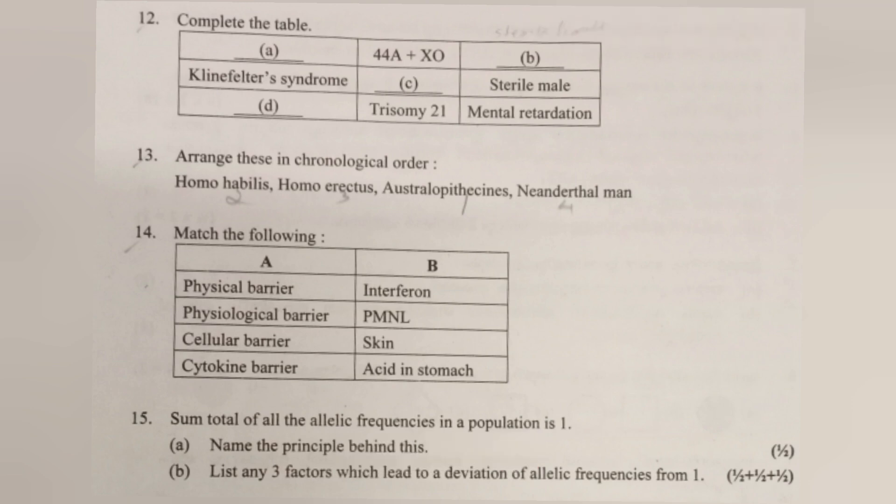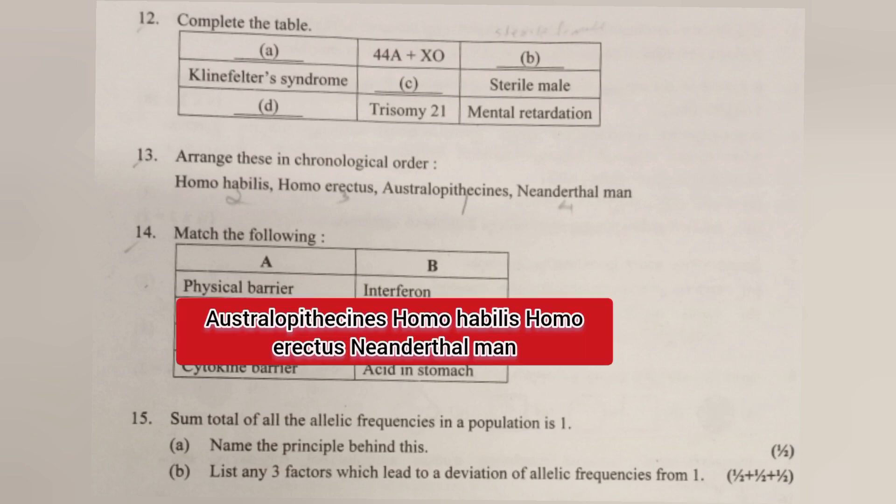Question 13: Arrange in chronological order: Homo habilis, Homo erectus, Australopithecus, Neanderthal man. Answer: Australopithecus, Homo habilis, Homo erectus, Neanderthal man.